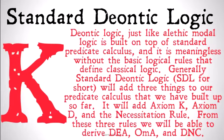Generally, standard deontic logic, or SDL for short, will add three things to our predicate calculus that we've built up so far. It's going to add Axiom K, Axiom D, and the necessitation rule.